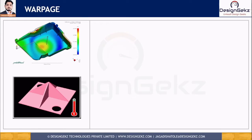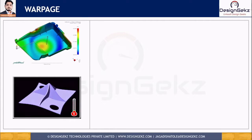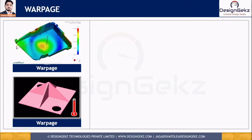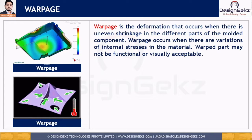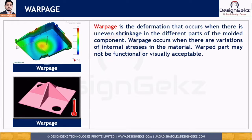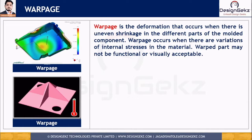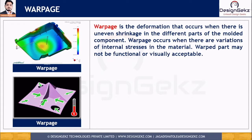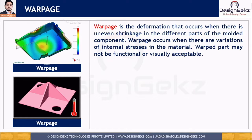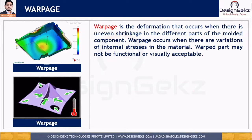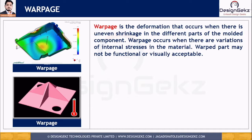Warpage is the deformation that occurs when there is uneven shrinkage in the different parts of your molded material or molded component. The result is a twisted, uneven, or bent shape which was not intended during the design phase. Warpage occurs when there are variations of internal stresses in the material caused by variations in shrinkage. The warped part may not be functional or visually acceptable.